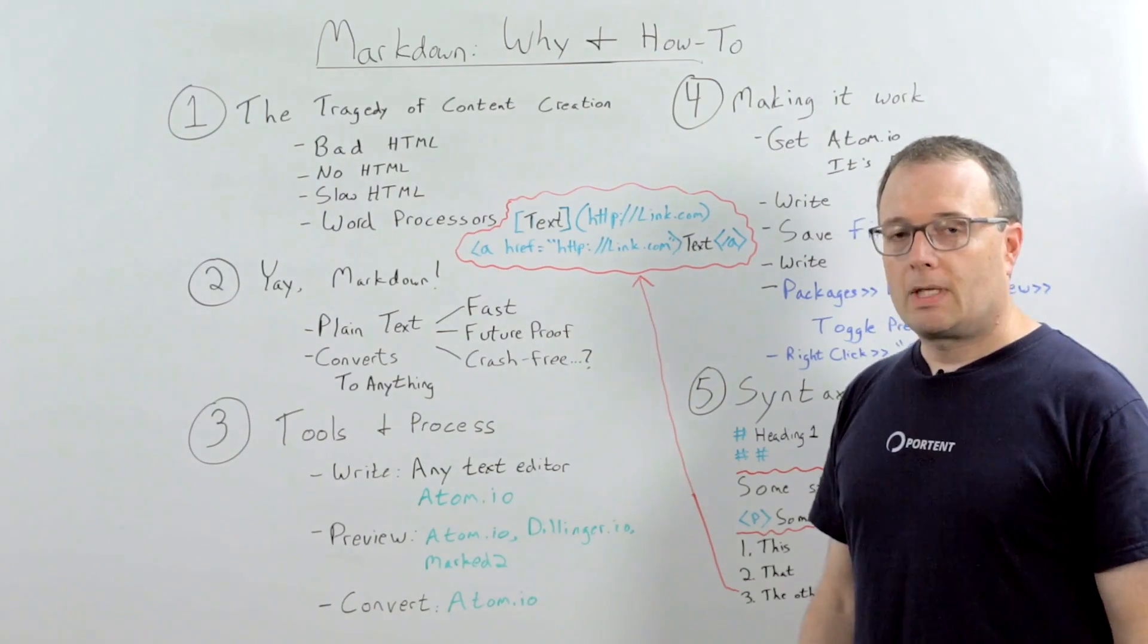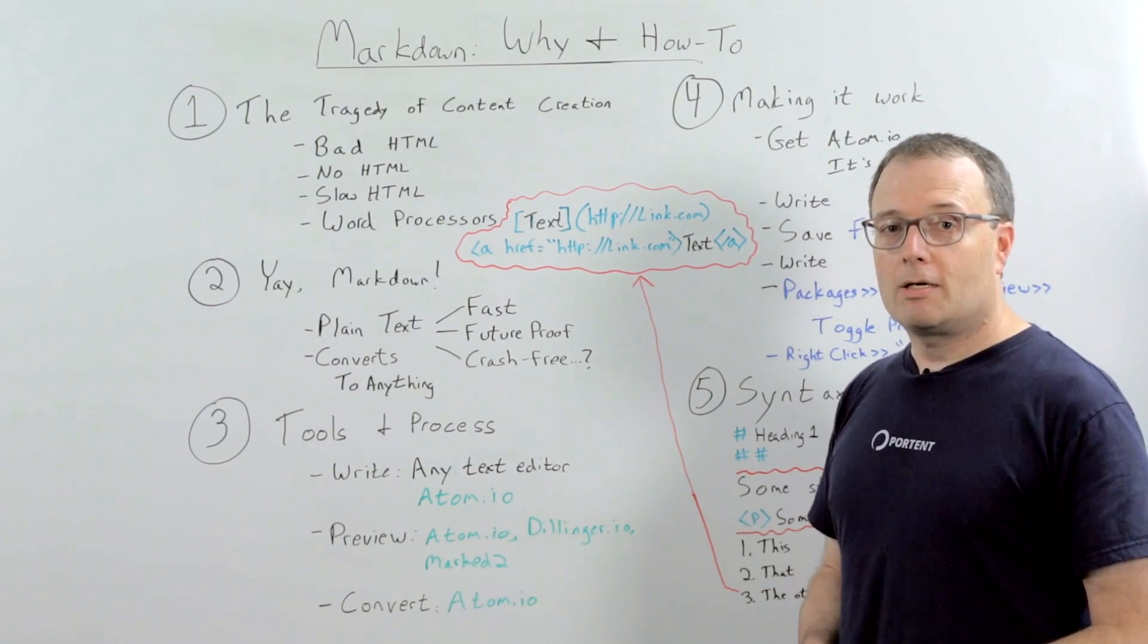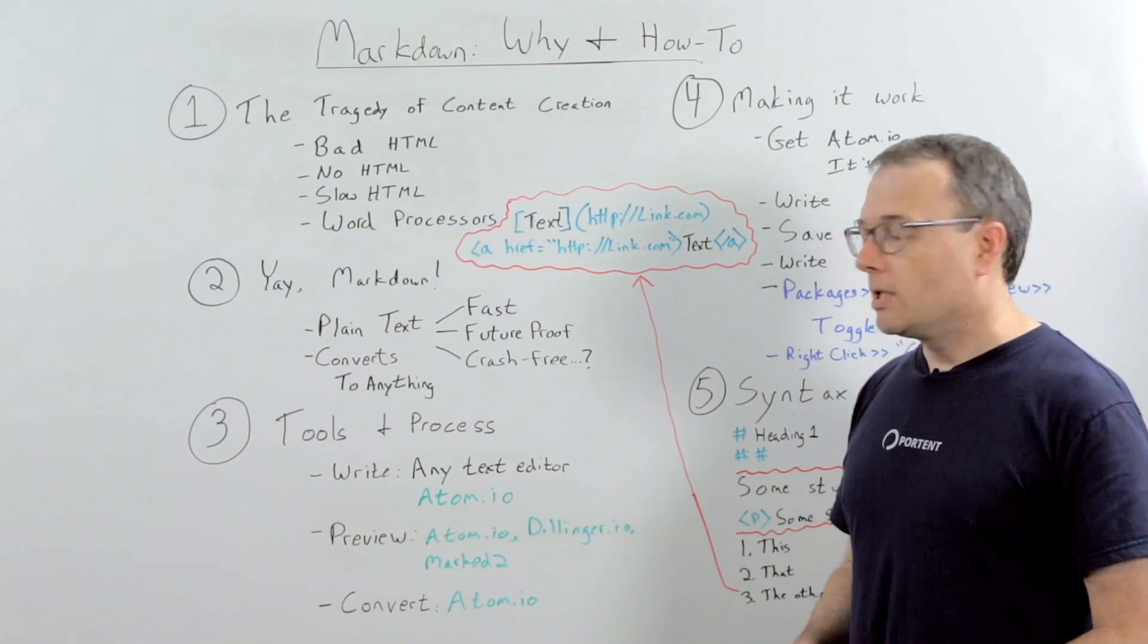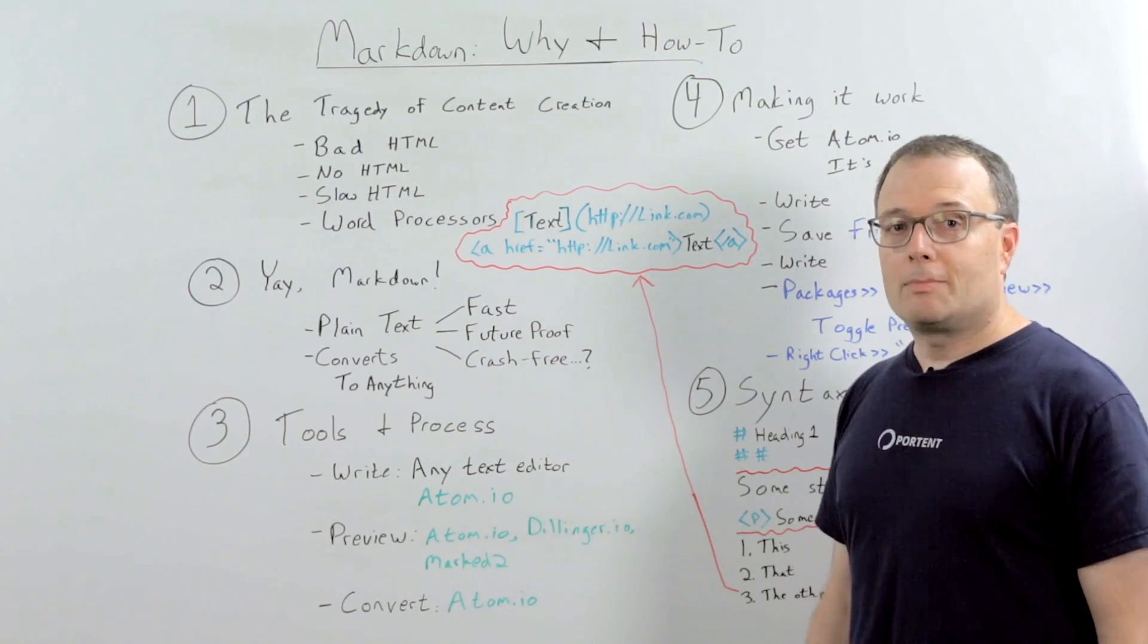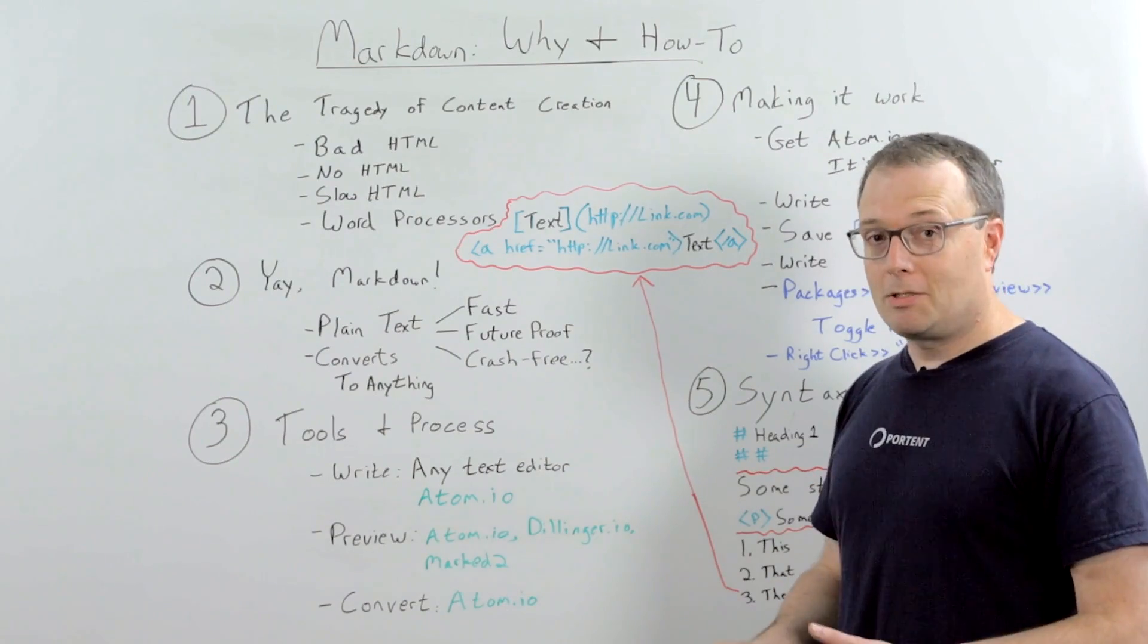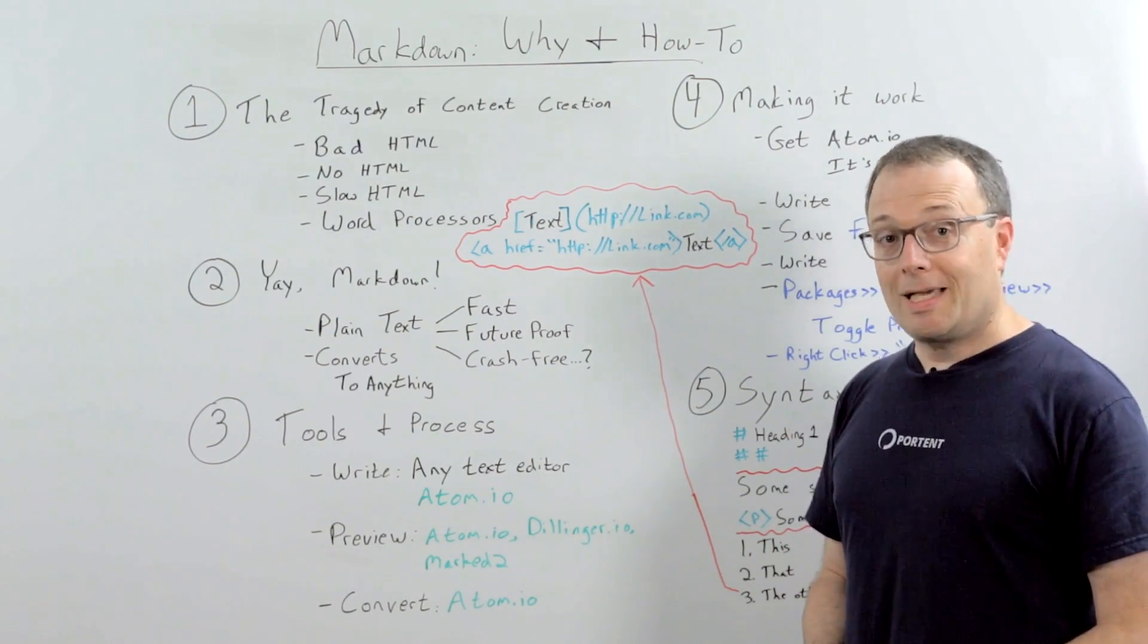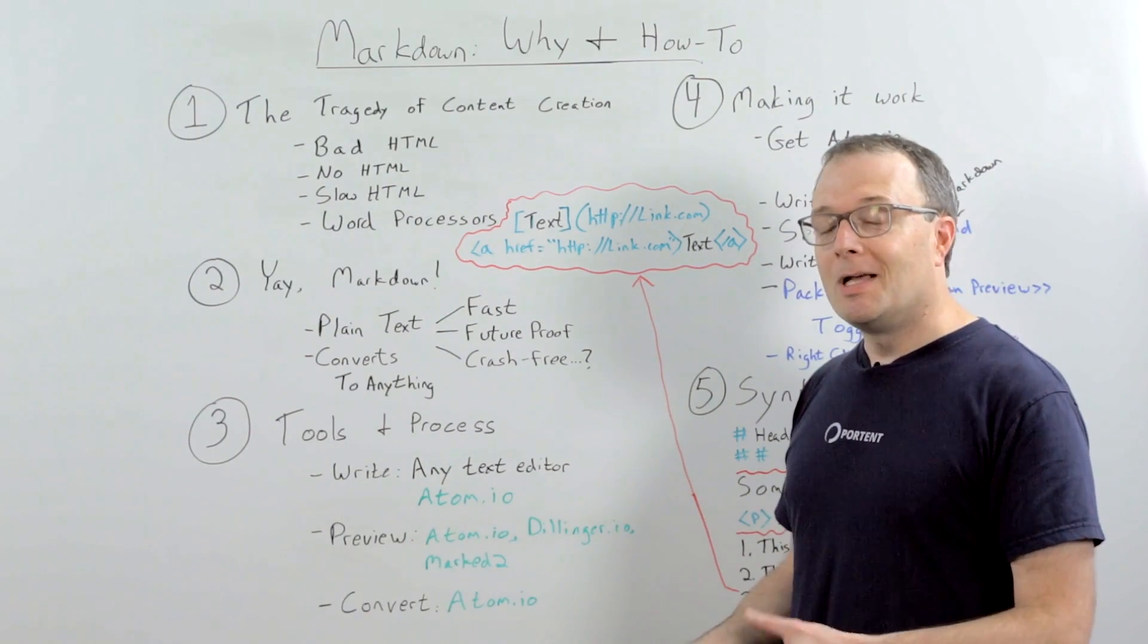Then, you preview it. Well, you can use a website called Dillinger.io. You can use a piece of software on the Mac called Marked2. But the best way is to just use Atom.io, because it has preview built into it. And then you convert it to HTML. And again, you can use Atom.io.